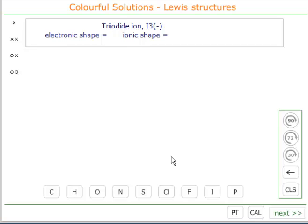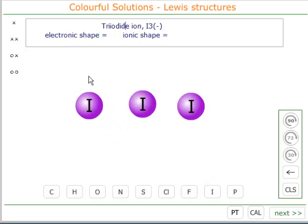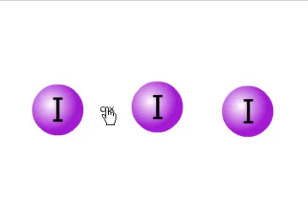So we need three iodine atoms: one, two, three. The iodine atoms are held together by shared pairs of electrons—one shared pair of electrons, and another shared pair of electrons.